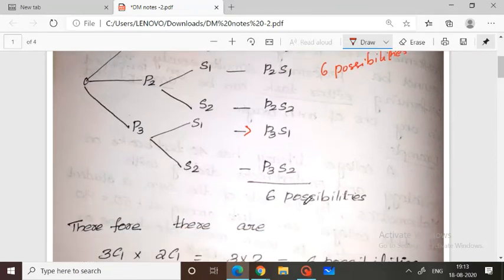In short, by using the rule of sum or rule of product, we can say the answer is six. We need one pant and one shirt. We have three pants and two shirts.